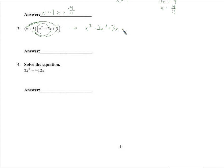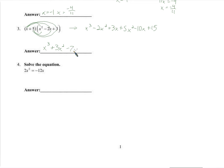Now for the 5: 5x squared, minus 10x, and plus 15. Let me collect like terms. We have x cubed, then combining the x squared terms: negative 2 plus 5 gives plus 3x squared, then 3x and negative 10x gives negative 7x, and then we have 15 — no other numbers to combine with it. So there we go.